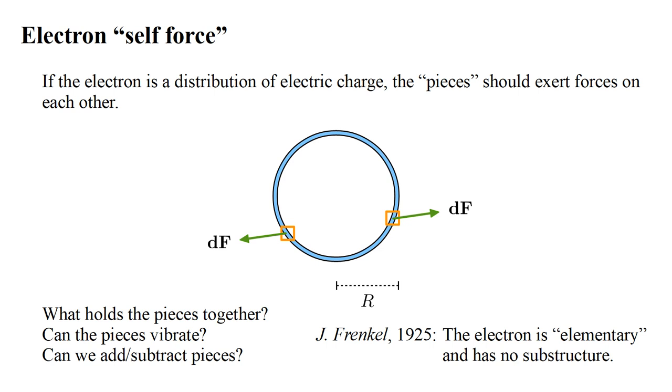Now, what geometric object has no substructure? A point. So the electron is a point particle, a point charge. We will discuss some of the reasons for this conclusion later. For now, let's continue thinking about the possible substructure of the electron.